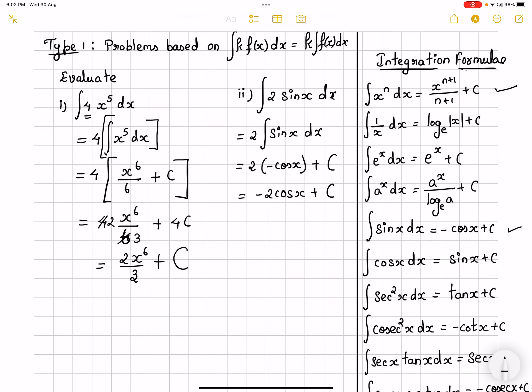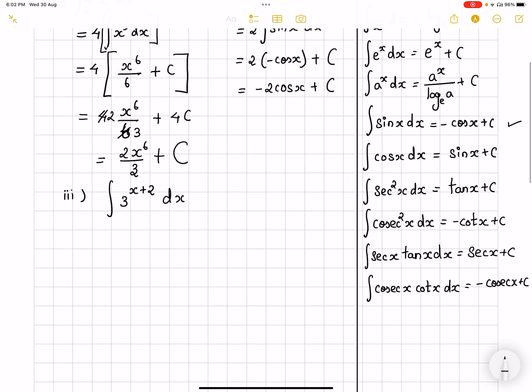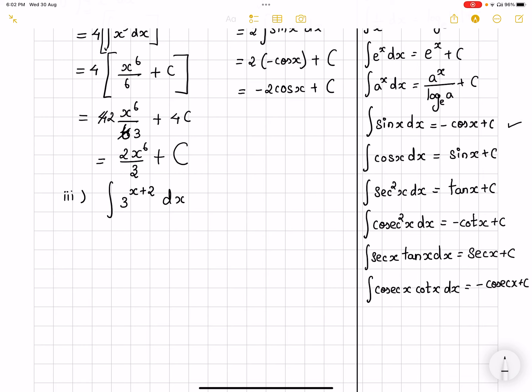Now the third one, you have integral 3 raised to the power of x plus 2 dx. Just observe, my power is x plus 2. When do our powers get added up? When the base is same. So I am going to use that particular property, that is 3 to the power of x into 3 square dx. So in this case when you observe 3 to the power of x, okay we have to integrate, but what about 3 square? It is 9 so it's a constant, it's coming out.